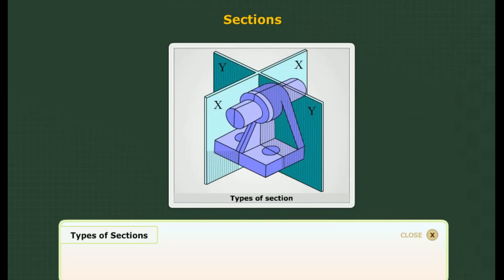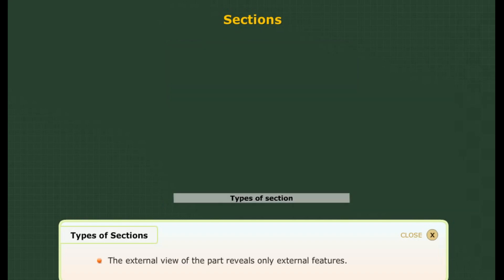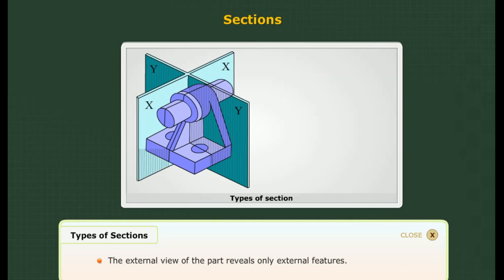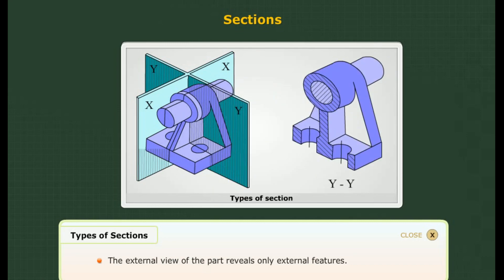Why is sectioning of parts required? The external view of a part reveals only external features. There could be hidden features which require sectioning in order to view the inner features. The object is imagined to be cut by a cutting plane, divided along two sectional planes — XX and YY. The XX sectional view shows hidden features in the vertical view, and the YY sectional view shows the horizontal view.